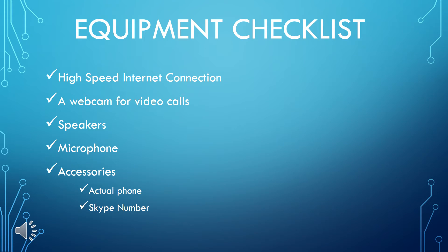You may already have everything you need to use Skype on your computer. Let's go over this equipment checklist to make sure you're all set up. First, a high-speed internet connection — this can be DSL, satellite, or even a cable modem. A dial-up connection is okay for instant messaging on Skype, but it isn't enough for a voice or video call, so you definitely need high-speed internet.